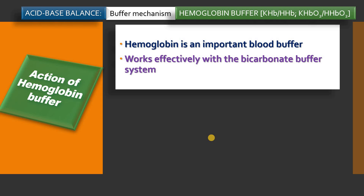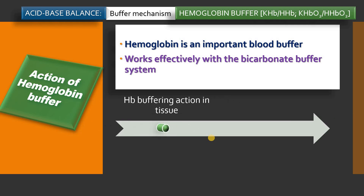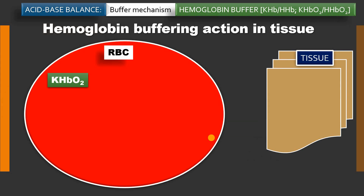The action of hemoglobin buffer actually takes place in two sites: hemoglobin buffer action in the tissues, and hemoglobin buffering action in the lungs. We are going to study both these aspects. First we will see the action of hemoglobin buffer especially in the tissue.